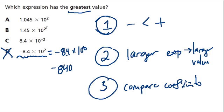So now all the exponents 2, 2, and negative 2, well, negative 2 is the smallest exponent. It's not a negative number. It just means 8.4 divided by 10 twice. So it's 0.084. That's too small.